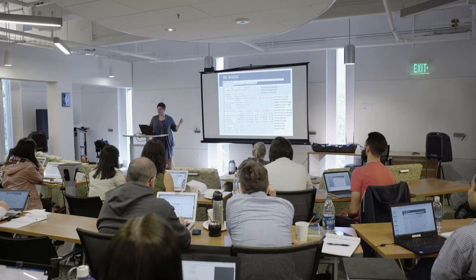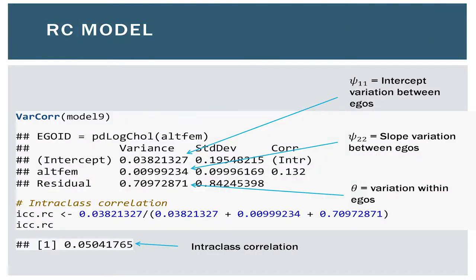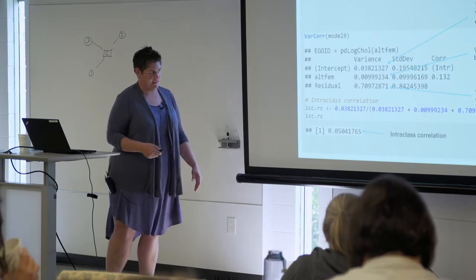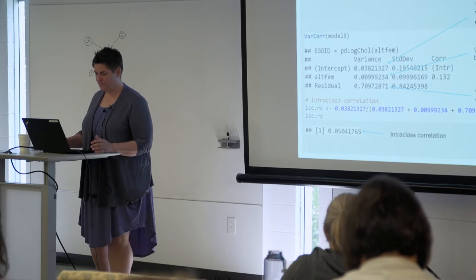To calculate the intraclass correlation in the random coefficient model, I have different levels of variance. I use the VarCorr command to get the variances rather than standard deviations. I calculate the ICC a little differently now because I have another random parameter, which needs to go into the overall level of variation in my denominator. My intraclass correlation is now about 0.05, which is still really low.